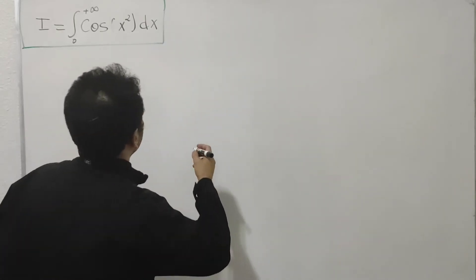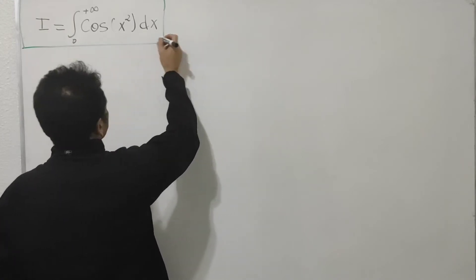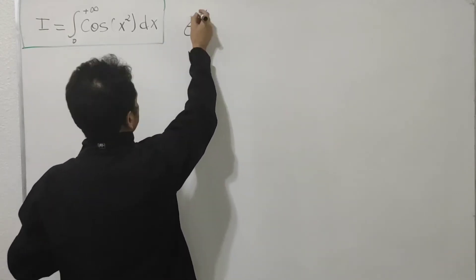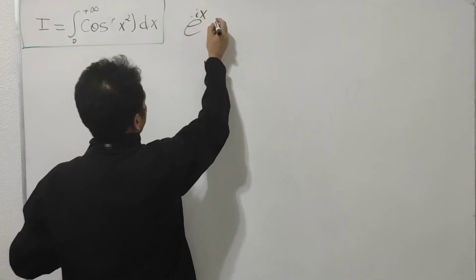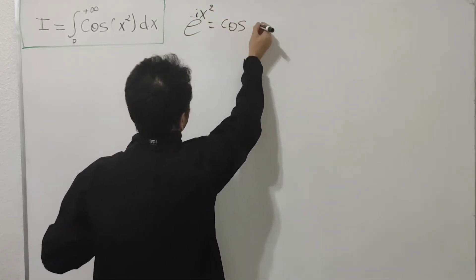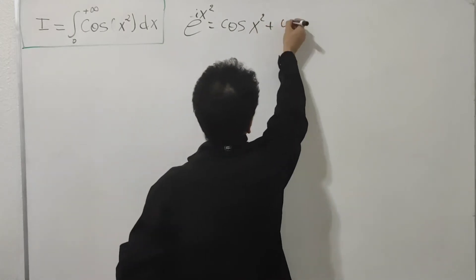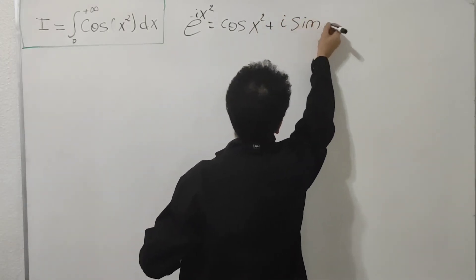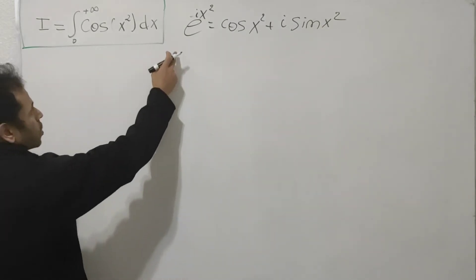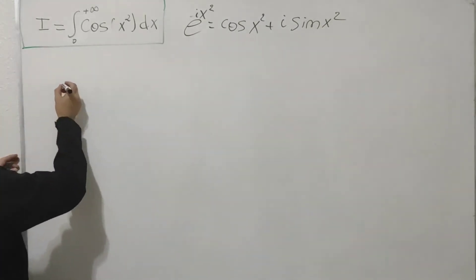Now I'm going to start. I'm going to use the Euler formula as a tool: e^(ix²) equals cosine(x²) plus i·sine(x²). I'm going to plug the integral on both sides.